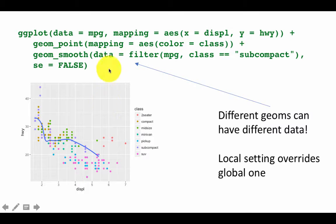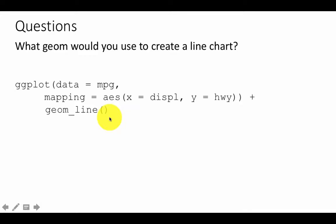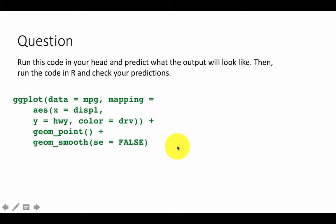Some questions to strengthen our understanding: what geom would you use to create a line chart? As you can probably guess, geom_line would do the job. Try it out — what you're going to get is that it plots all the points and then simply connects them with a line. In this particular case the line chart isn't very useful, but it shows how easy it is to change geoms.